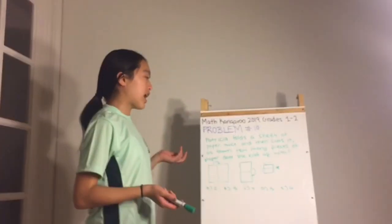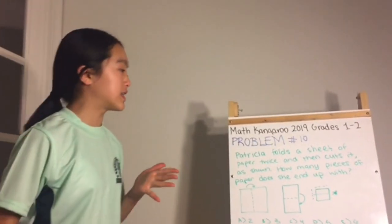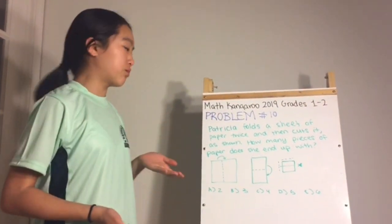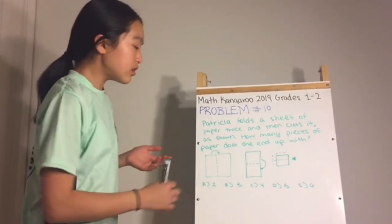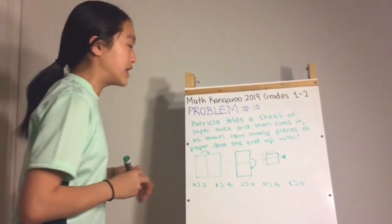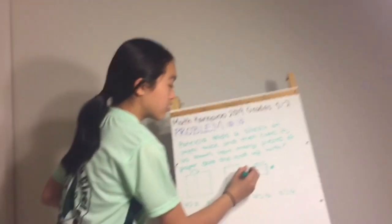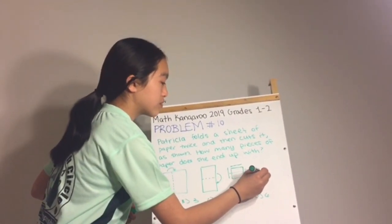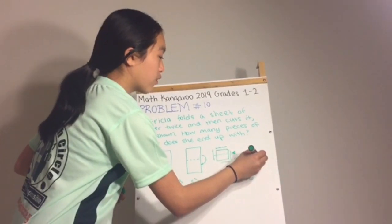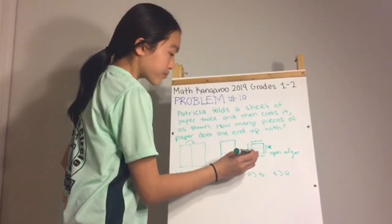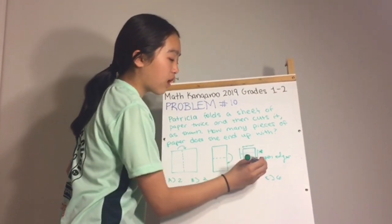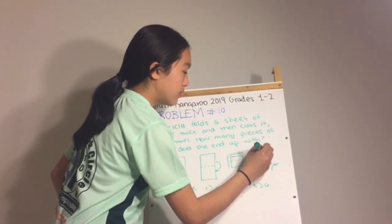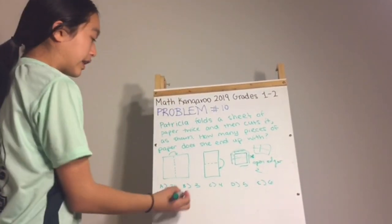Problem number ten: Patricia folds a sheet of paper twice and cuts it as shown — how many pieces does she end up with? After folding twice, two sides are folds and two are open edges. When cut, the two open edges fall off creating two pieces, while the top part remains one piece — making the answer three.